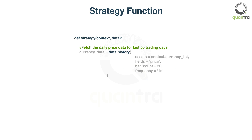We call the data.history method with the parameters to fetch the price data of the last 50 trading days for all the currency pairs in context.currency_list, with frequency equals 1d to fetch daily data. The function returns a pandas DataFrame indexed by the date, stored in the currency_data DataFrame.